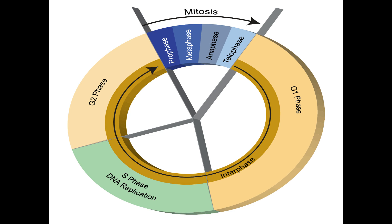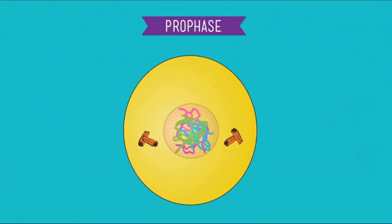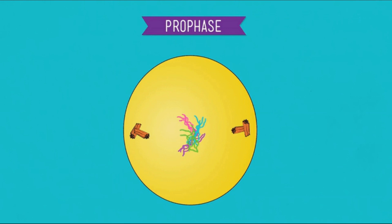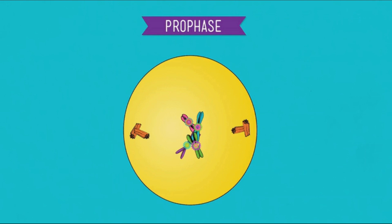It is easy to remember that prophase is the first phase because of the prefix pro, which means before. In prophase, the nuclear envelope, or membrane, of the cell's nucleus begins to dissolve, and the DNA chromatin begins to condense. At first, this chromatin is tangled up inside of the nucleus, but when it condenses, it begins to form neat chromosomes, which are two chromatids stuck together in an X-like shape. The cell also begins to start building mitotic spindles, which will be used to maneuver the chromosomes around the cell in later mitotic stages.